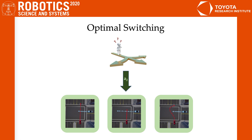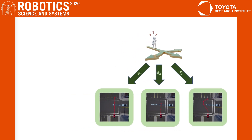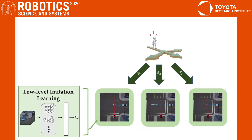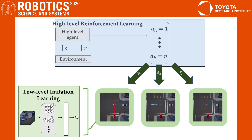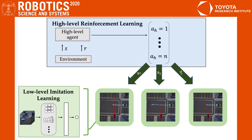Here's how we solve the problem. We first learn how to drive in different driving modes using imitation learning, which in a neural network takes a sequence of images in each mode and outputs the action that needs to be taken. Then we need a high-level agent to decide which mode to execute at each time step. We then use reinforcement learning to learn how to optimally switch between modes.